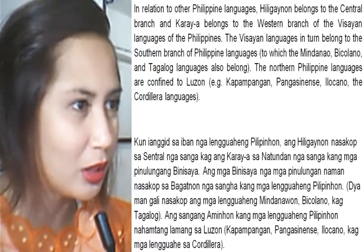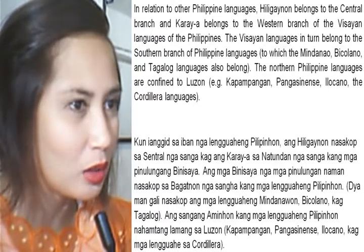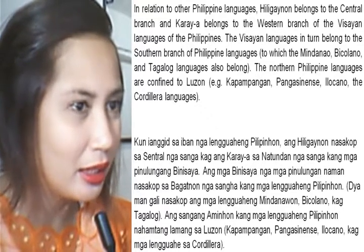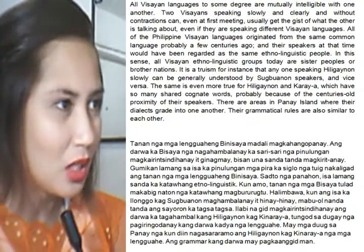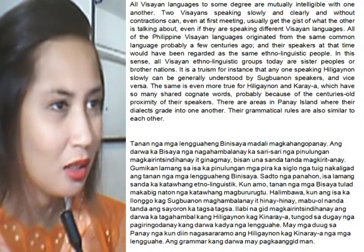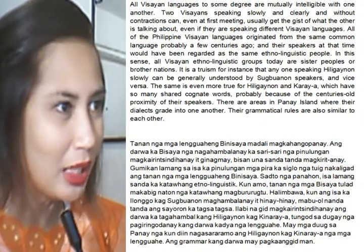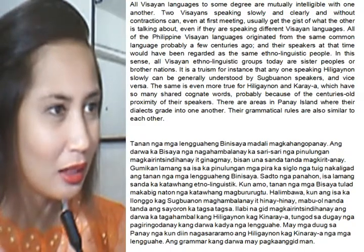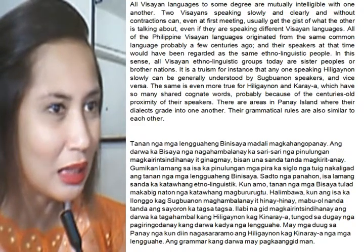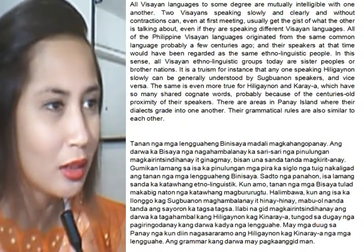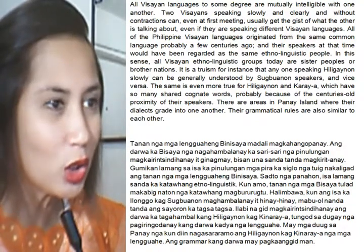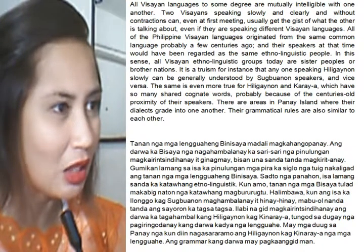The Visayan languages belong to the southern branch of the Philippine language family, which also includes the Mindanao languages, Bicolano, and Tagalog. The northern branch of Philippine languages, found in Luzon, includes Kapampangan, Pangasinense, Ilocano, and the Cordillera languages. All Visayan languages are mutually intelligible to a degree. Two Visayan speakers of different languages can understand each other, though minimally, since they descended from one language several centuries ago — at that time, they were one ethnolinguistic people.